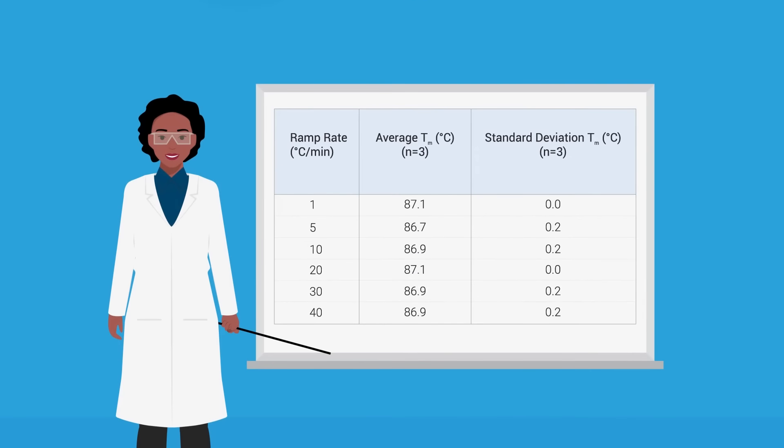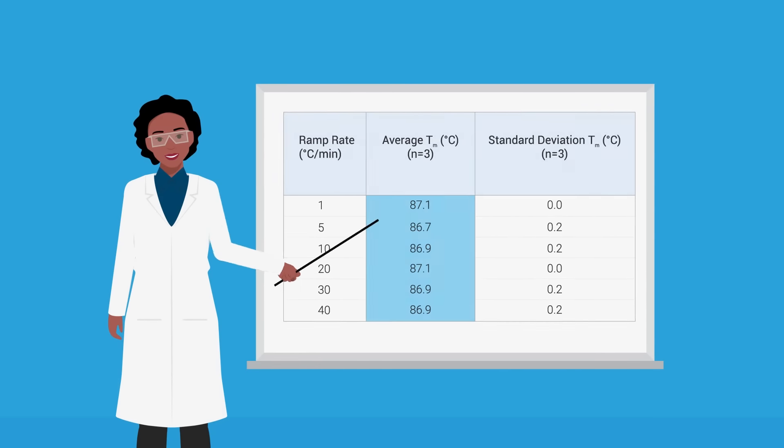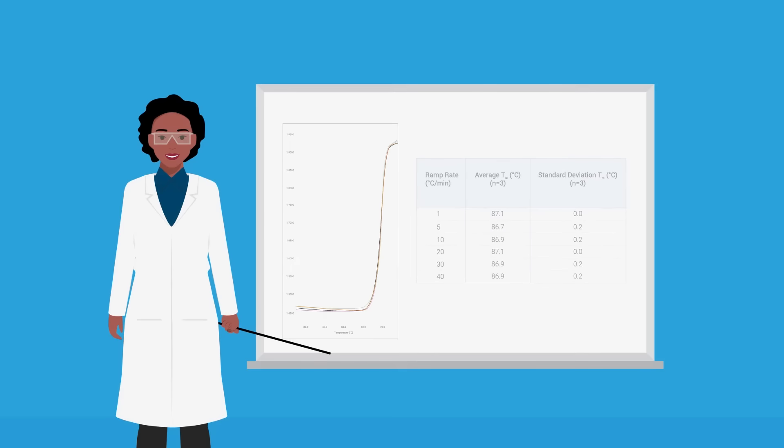Alice tested temperature ramp rates ranging from 1 degree per minute to 40 degrees per minute. The melting temperatures of her oligonucleotide were within 0.4 degrees of each other regardless of ramp rate, so she's confident that her data accuracy is not affected by the shorter assay time.